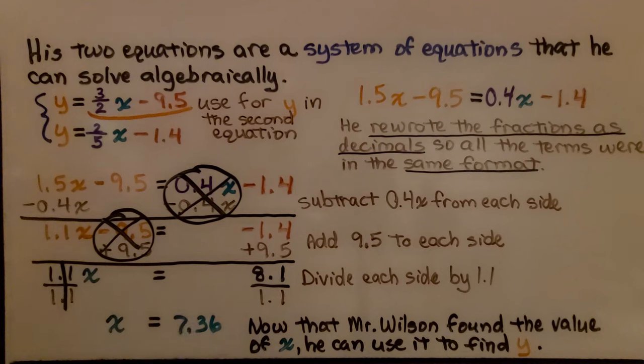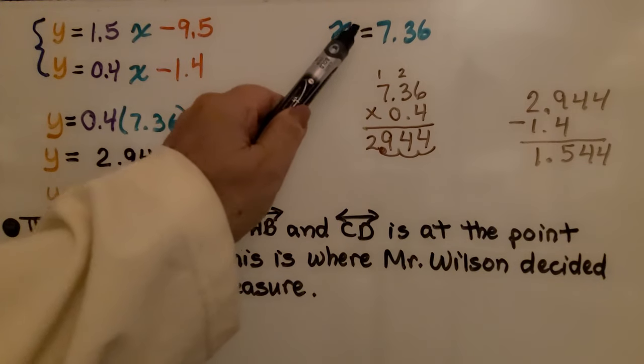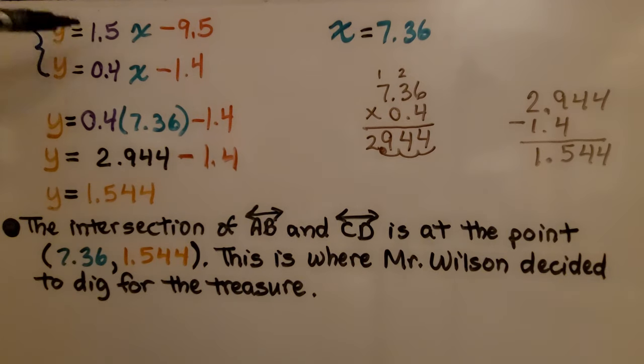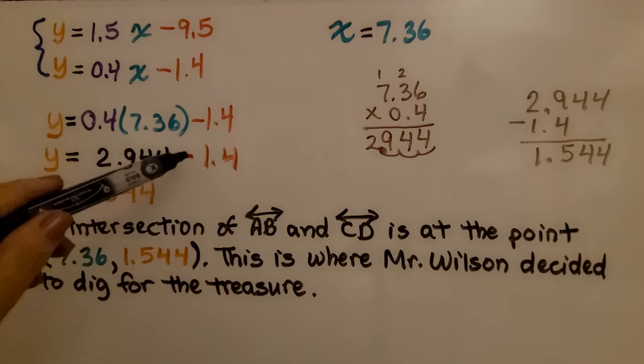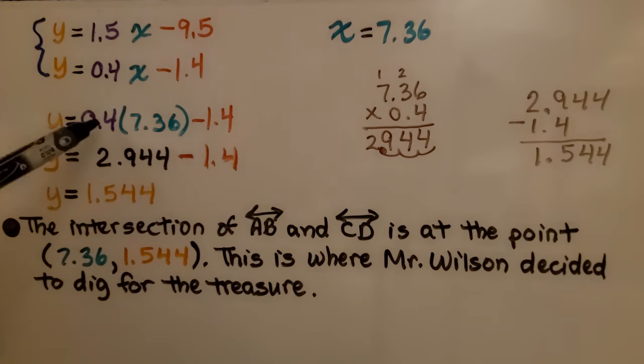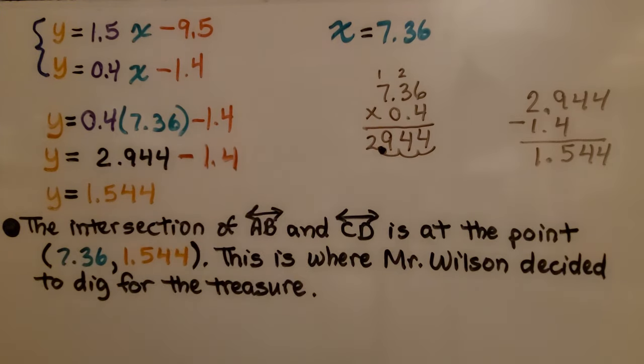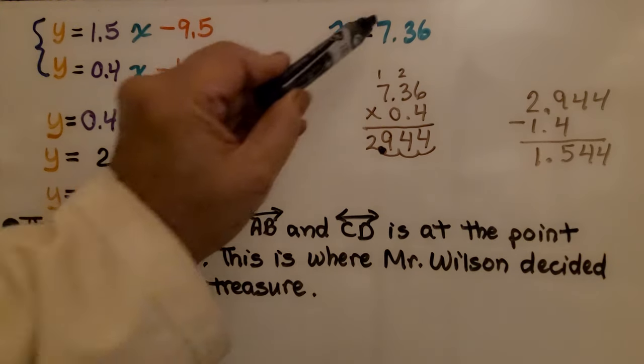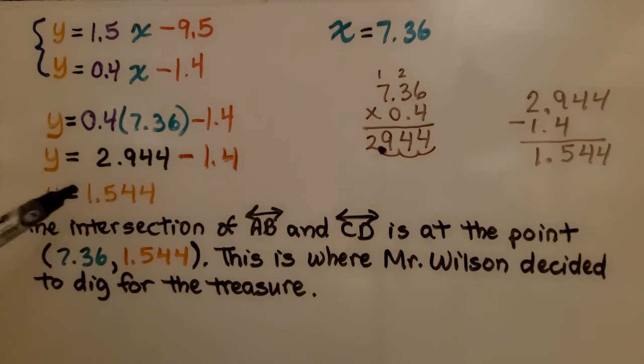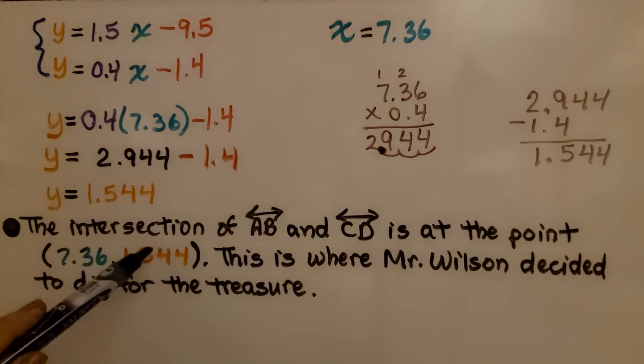Now, that Mr. Wilson found the value of x, he can use it to find y. We know that x equals 7.36. We have our system of equation written in all decimals. We can plug in 7.36 into this second equation. And we get y equals 2.944 minus 1.4. When we multiplied 0.4 by 7.36, we got 2.944. When we do 2.944 minus 1.4, we get 1.544. So, we know that x is 7.36 and y is 1.544.